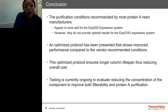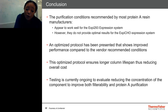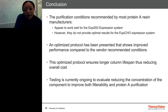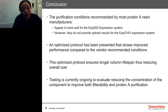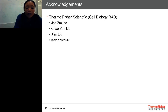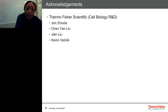In conclusion, the purification conditions recommended by most protein A resin manufacturers appear to work well for the XB293 expression system. However, they did not provide optimal results for the XBCHO expression system. An optimized protocol has been presented that shows improved performance compared to the vendor recommended conditions. The optimized protocol ensures longer column lifespan, thus reducing overall costs. Testing is currently ongoing to evaluate reducing the concentration of that component to improve both the filterability and the protein A purification aspect. I would like to acknowledge the Thermo Fisher Scientific Cell Biology R&D Group: Joan Zamuda, director of the Cell Biology R&D Group; Chow Yan Lu and Jian Lu, the lead scientists involved in the XBCHO expression system; and Kevin Vedvek for his help on the statistical analysis.